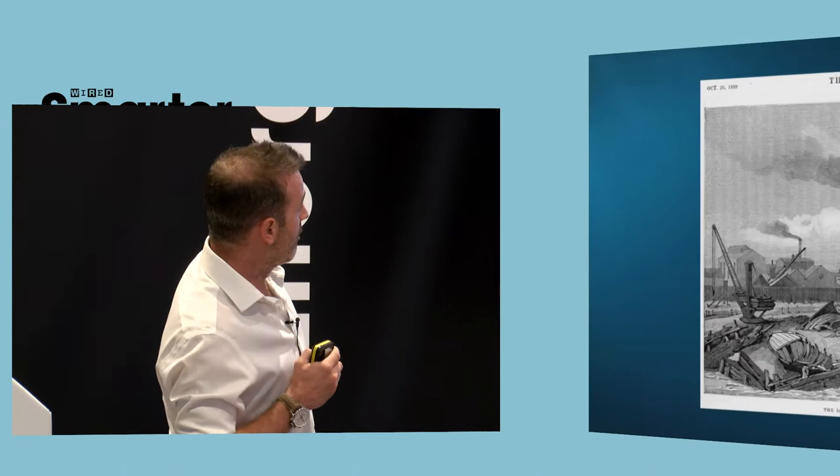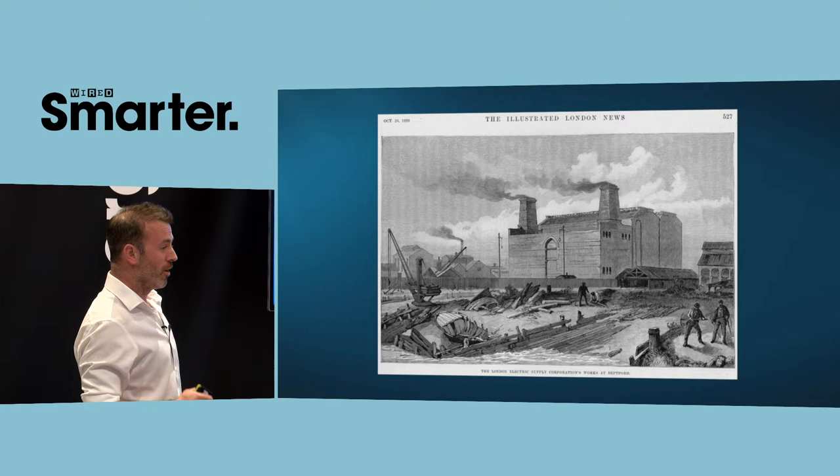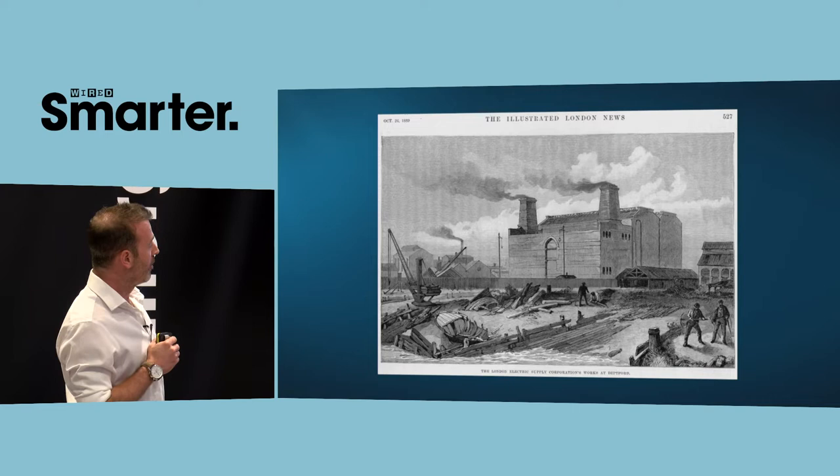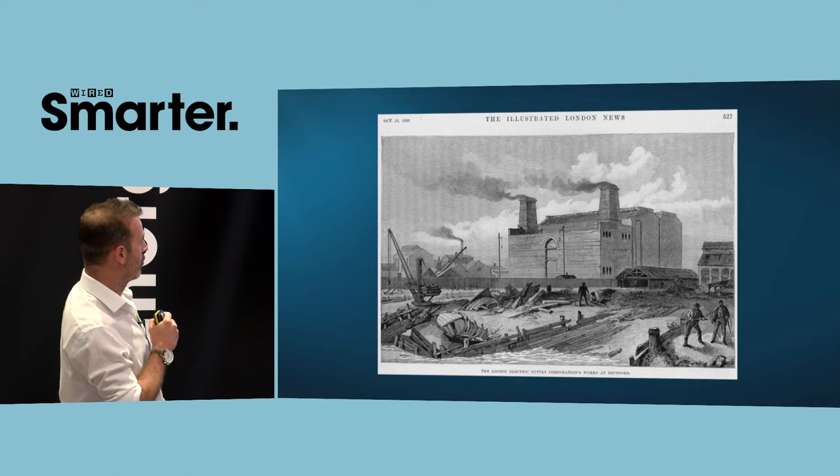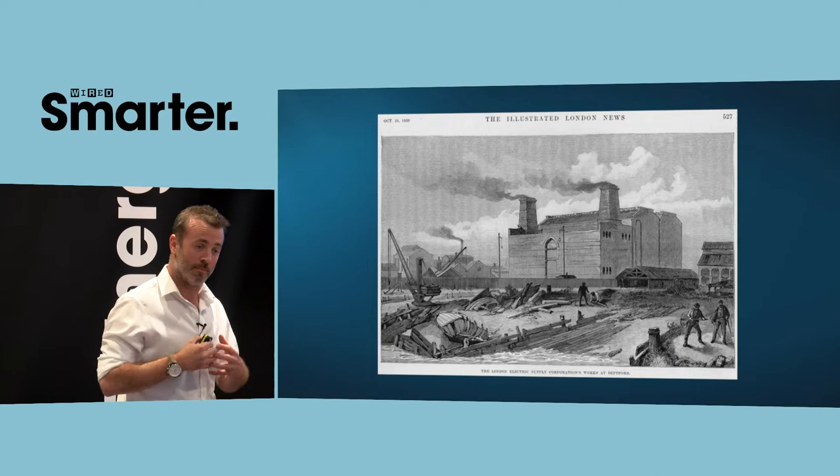So this is Deptford Power Station. It opened in 1891. It was the world's first centralized high voltage power station in the world at 1,000 horsepower ladies and gentlemen. About five miles away and it ran on a seven mile cable to a substation just outside Grosvenor Square. And ever since then the model for energy has been basically the same. You build a large power station, you have a very long wire and then you have customers at the end of it.